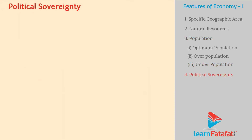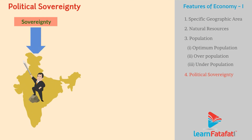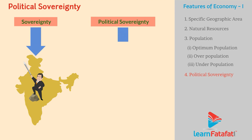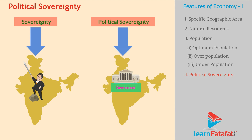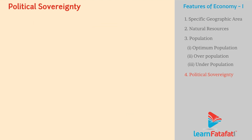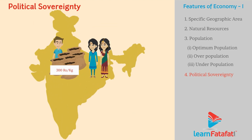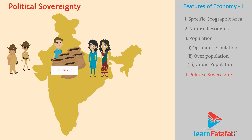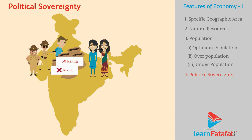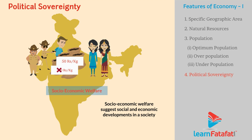Political Sovereignty. The word sovereignty suggests supreme power or authority to govern the country. Political sovereignty suggests that the government should have supreme power to take decisions and make laws independently. Only such policy can keep control on economic activities and bring socio-economic welfare in the country.